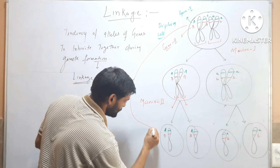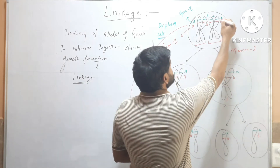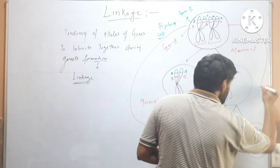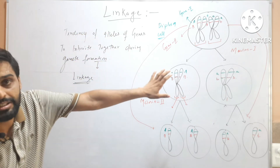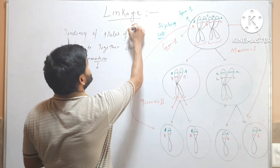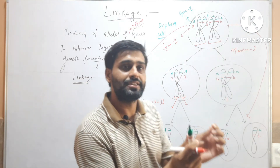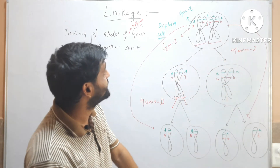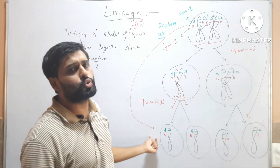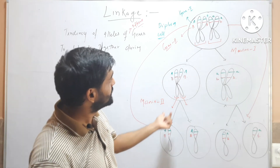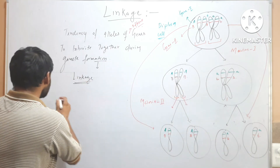These alleles — capital A and capital B — being inherited together during gamete formation is called linkage. Similarly, small a and small b are inherited together during gamete formation, which is also called linkage. Linkage is the tendency of alleles of different genes to inherit together during gamete formation. In this example, capital A and capital B are present together and also inherited together.